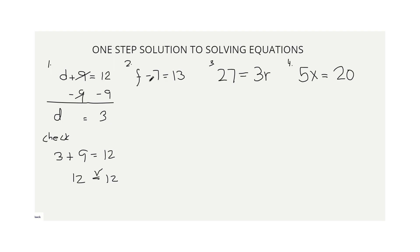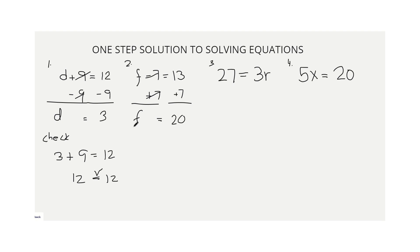Number 2: f minus 7 equals 13. Since we have negative 7, add positive 7 to both sides. Negative 7 plus 7 is 0, leaving f. On the right, 13 plus 7 equals 20. Therefore, f equals 20. To check: substitute f with 20 — 20 minus 7 equals 13, and 13 equals 13. So 20 is our solution.